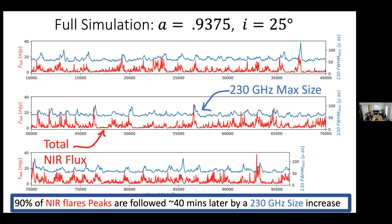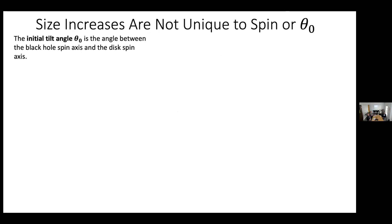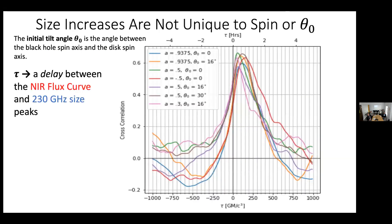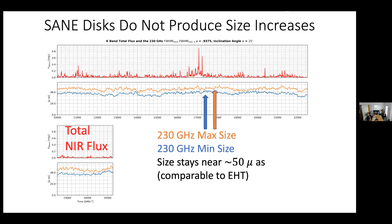What we're hoping is that it's actually a good idea to look during a near-infrared flare and capture this variability in the 230 gigahertz size, to support our model versus models without high magnetization. That's the key parameter our model has that others don't — our disks are magnetically arrested, or MAD, while other SANE disks are less magnetized. We can reproduce the static EHT image with a SANE disk, but there's very minimal variability and none of the dramatic size increases seen in the MAD case.